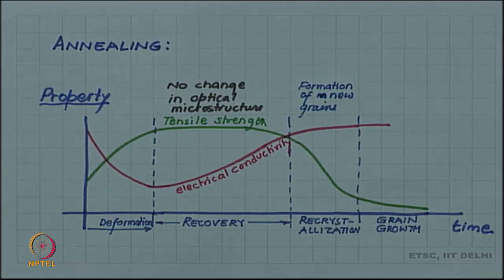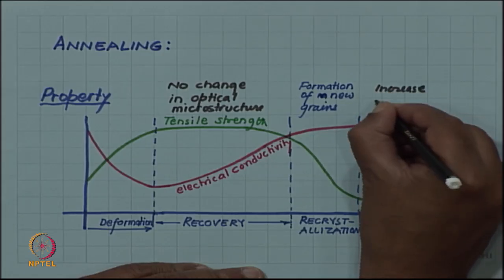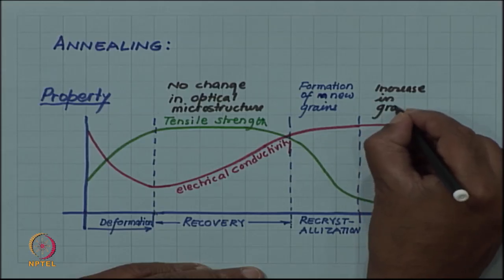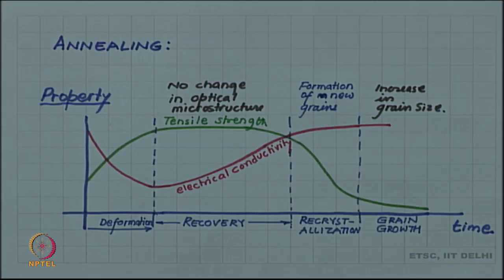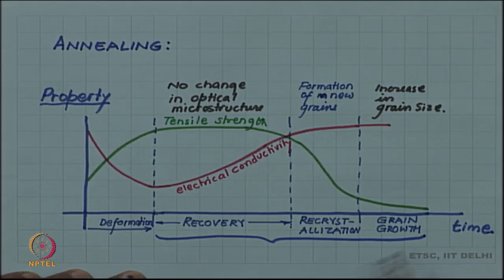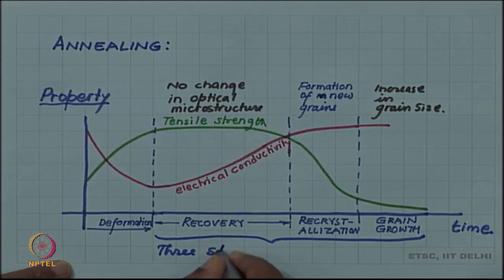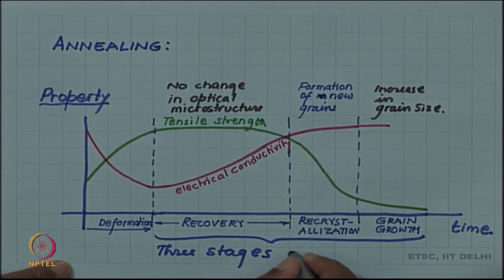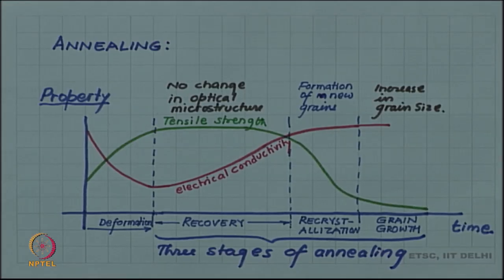In the final stage, called grain growth, there is a significant increase in grain size. So, recovery, recrystallization, and grain growth are the three stages of annealing, and we will look at them one by one.